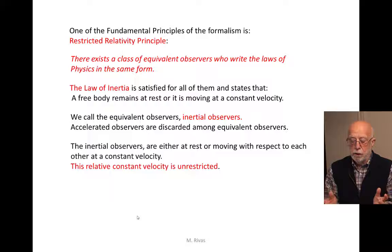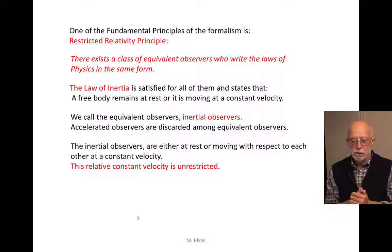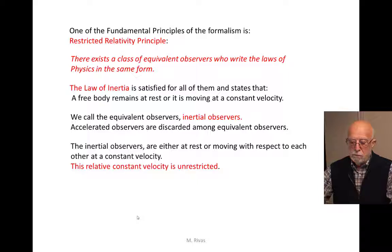This set of inertial observers are either at rest with respect to each other — perhaps with different orientations — or if they have a relative velocity, it is a constant relative velocity. This constant relative velocity is unrestricted at first in this part of the analysis.